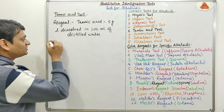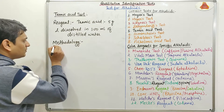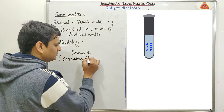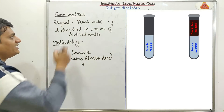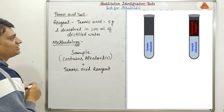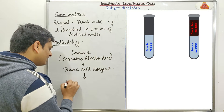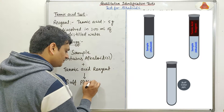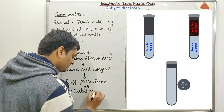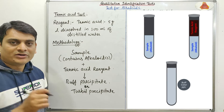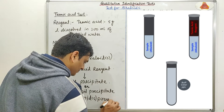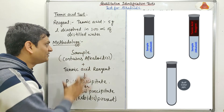Now coming to the methodology for this test, which is very simple. First we will take the sample — this sample contains alkaloid or alkaloids. Now we will add the tannic acid reagent, which is a 5% solution of tannic acid. After that, if we are getting a buff precipitate or turbid precipitate, it means alkaloid or alkaloids are present in our sample. So this is the composition of the reagent and this is the methodology for the tannic acid test.